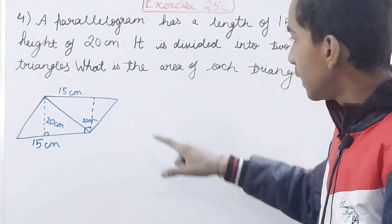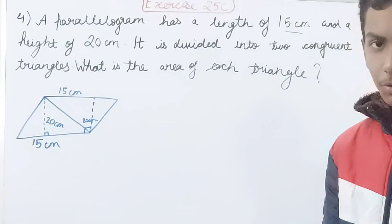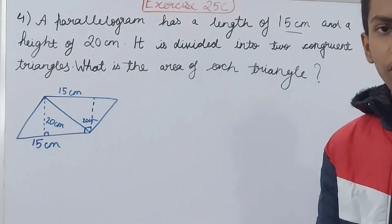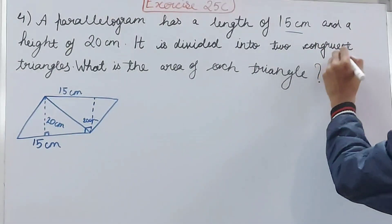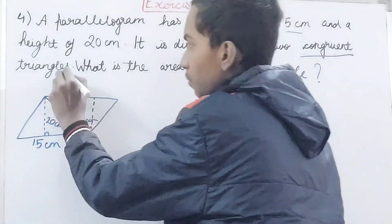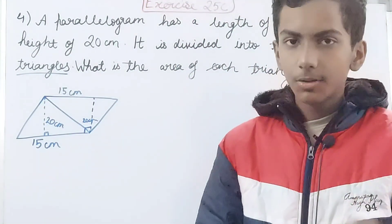But if you take it from here and here you might get a different height. But if you're taking the same opposite sides that are equal then your height is going to be 20 centimeters. So it is saying it is divided into two congruent triangles. What does congruent triangle mean?